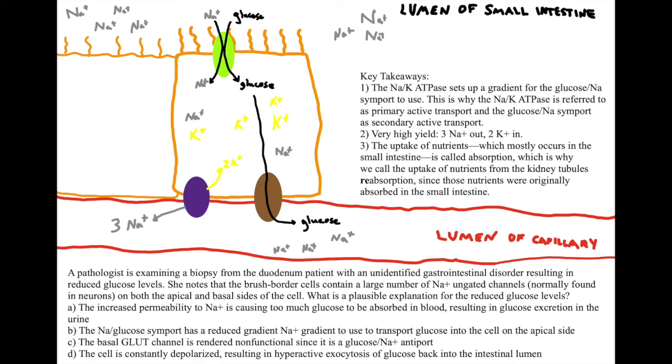How's it going everyone? This is High Yield MCAT, here today to talk about glucose transport in epithelial cells. Now, the nomenclature epithelial is kind of interesting in itself. So a lot of students, through no fault of their own, just because it hasn't been explained to them, don't know what the difference between an endothelial cell and an epithelial cell is.